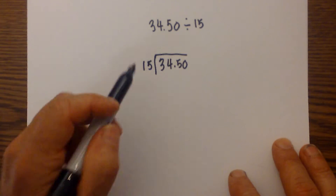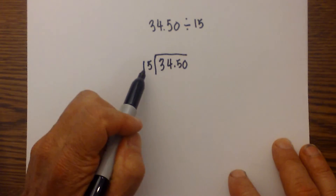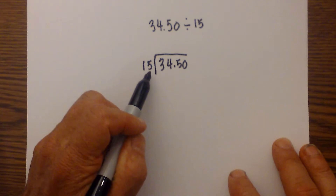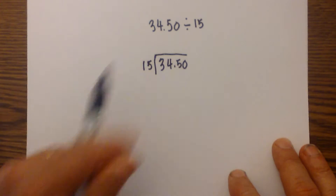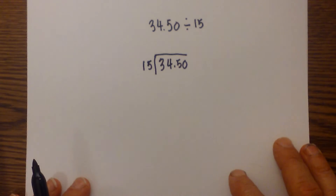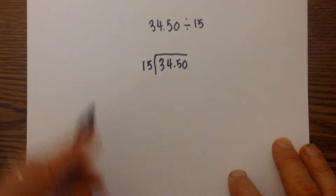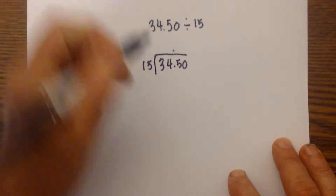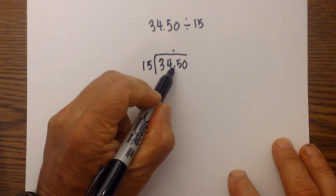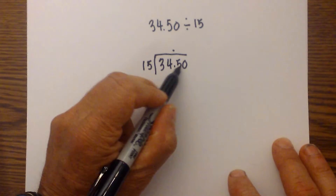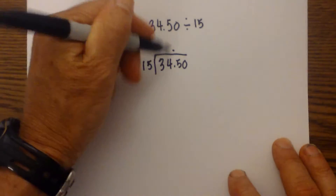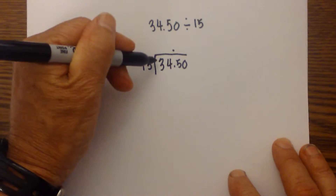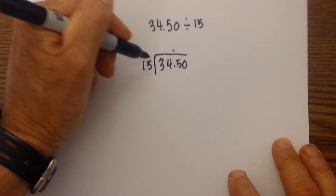Now in this particular one, since the divisor does not have a decimal, you can just go ahead and divide and just be mindful to keep the decimal mark right there — you can just move it up. So 34 divided by 15.